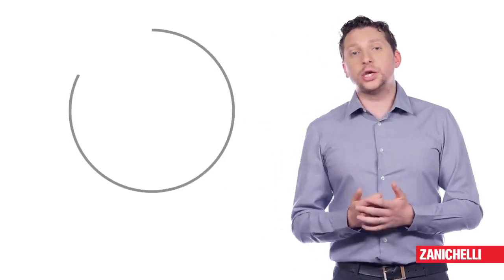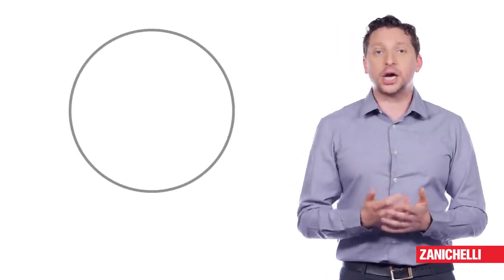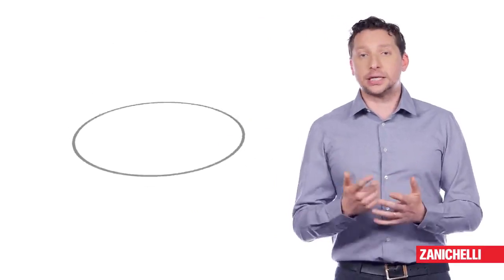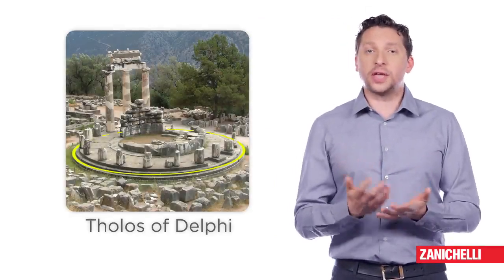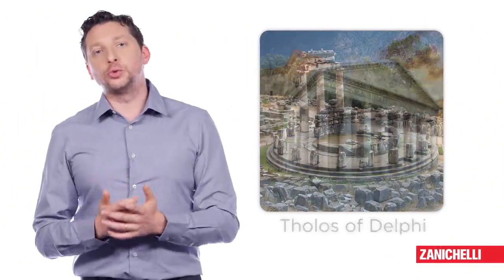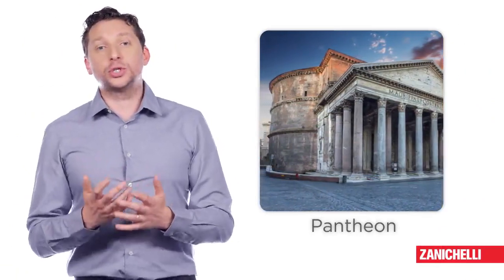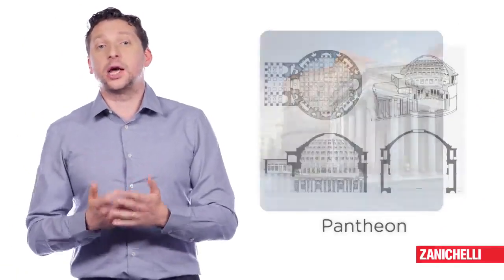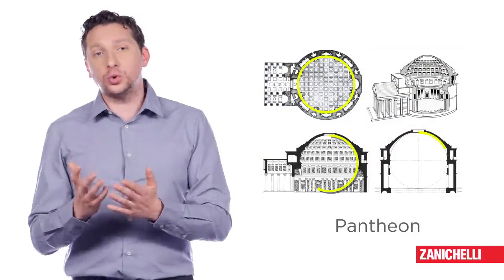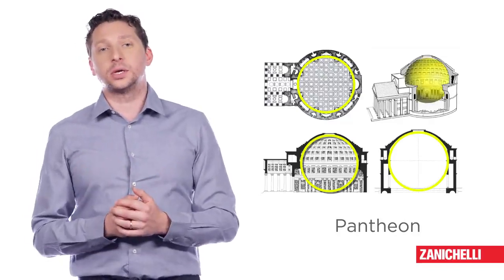The circle was widely used in ancient Greece because of the divine character attributed to it. An example is the Tholos of Delphi, dedicated to Athena. Many typical Roman buildings, drawing inspiration from Greek canons, also have a circular plan like the Pantheon, in which there is also a vertical circle inscribed.